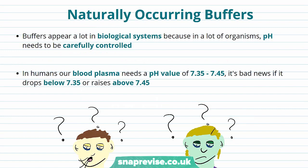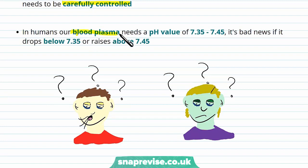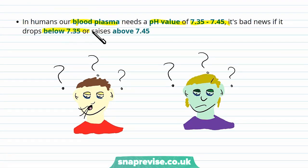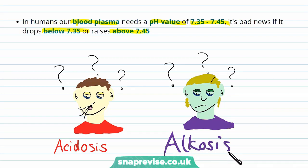Buffers are useful in biological systems because pH needs to be carefully controlled for many of life's processes. In humans, blood plasma needs a pH value of between 7.35 and 7.45. If it drops below 7.35, we develop acidosis — our blood is too acidic — causing jaundice, fatigue, and heavy breathing. If the pH rises above 7.45, our blood gets too alkaline and we develop alkalosis, whose symptoms include nausea and confusion. Both conditions are very serious, which is why maintaining the range between 7.35 and 7.45 is critical.